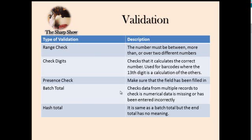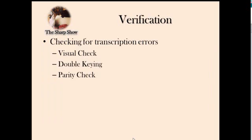The hash total is a bit different — it's basically a batch total that is meaningless as a value. For example, it might sum up all telephone numbers or account numbers, and that total has no real-world meaning. Hash totals don't come up in exams very often, but you still need to know it. The batch total, present check, and the other validation checks do come up quite a lot, so make sure you know those.